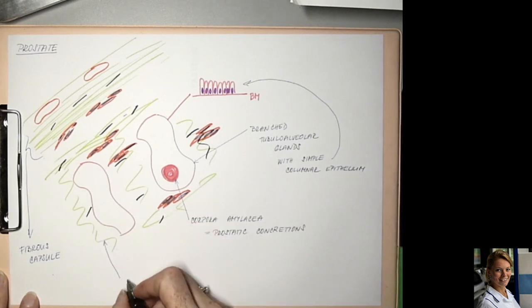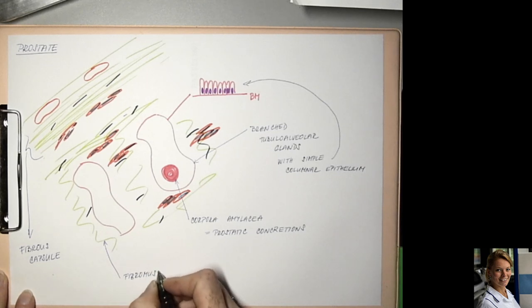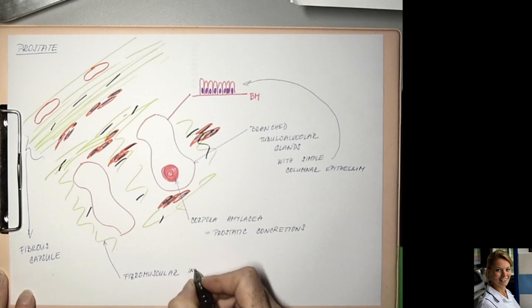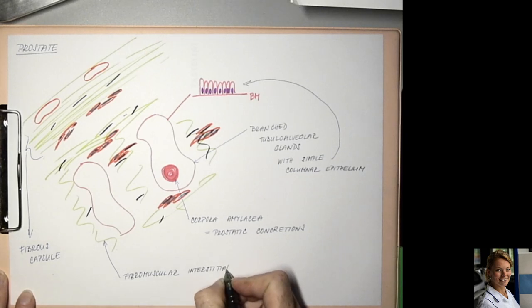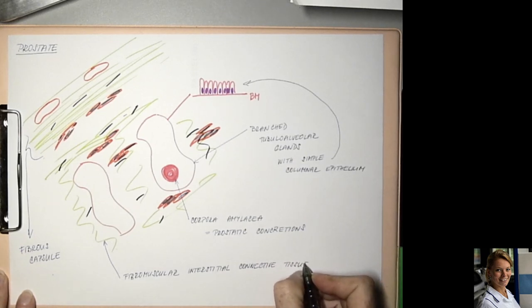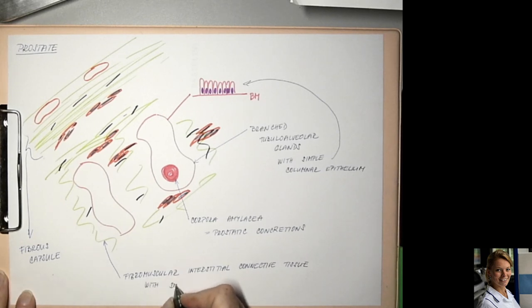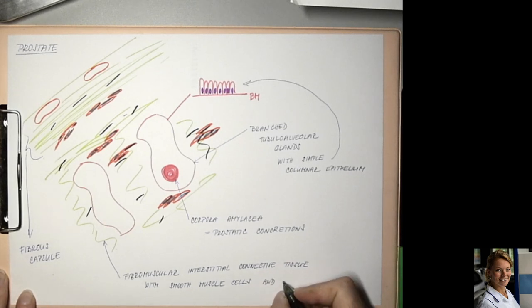And here is a fibromuscular interstitial connective tissue with smooth muscle cells, collagenous and elastic fibers, and also with blood vessels.